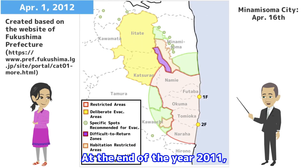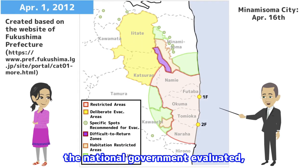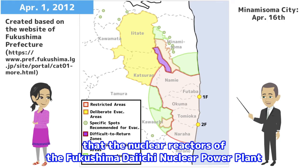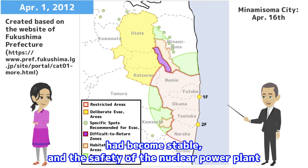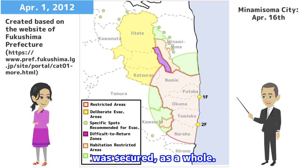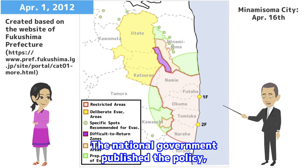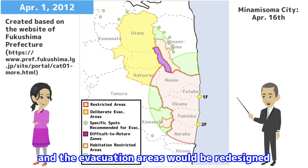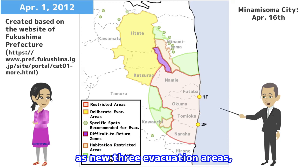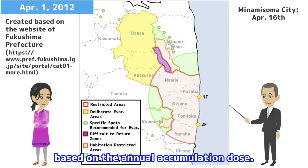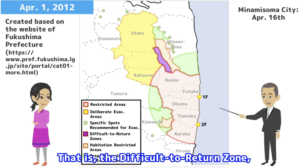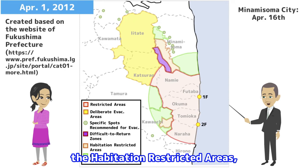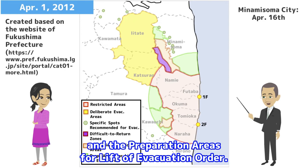At the end of the year 2011, the national government evaluated that the nuclear reactors of the Fukushima Daiichi Nuclear Power Plant had become stable and the safety of the nuclear power plant was secured as a whole. The national government published the policy that the designation of the restricted area would be lifted, and the evacuation areas would be redesigned as new three evacuation areas based on the annual accumulation dose: the difficult-to-return zone, the habitation restricted areas, and the preparation areas for lift of evacuation order.